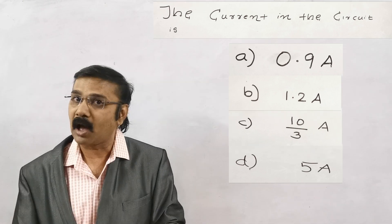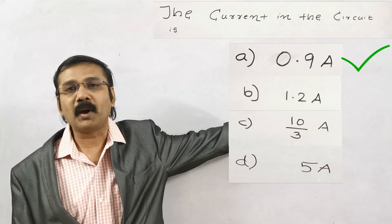In the options you have to find where the answer is. Yes, it is there, it is option A, 0.9 ampere.